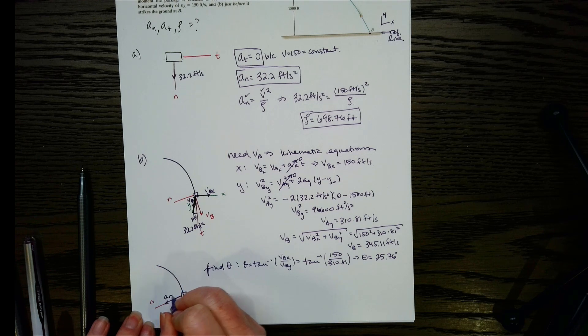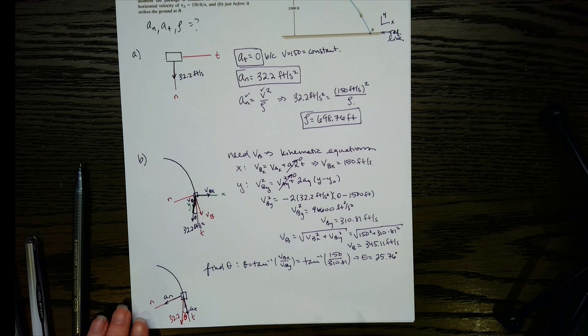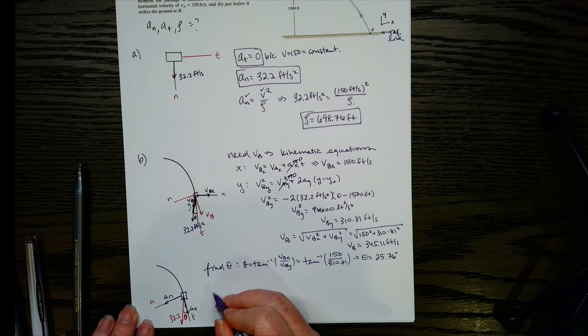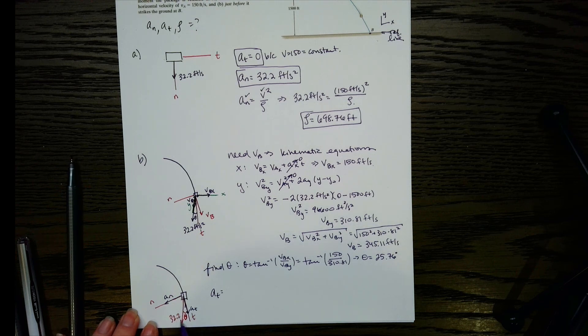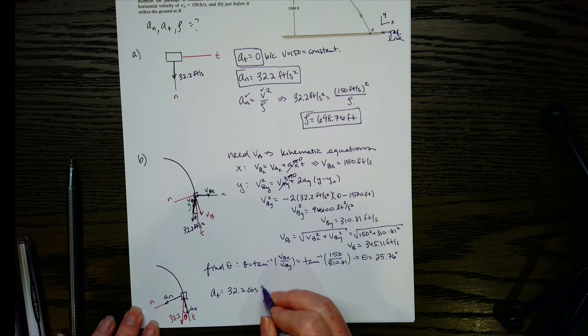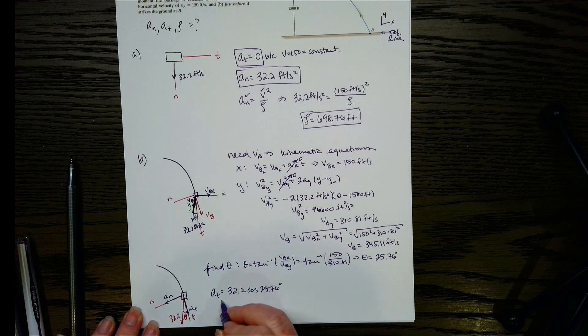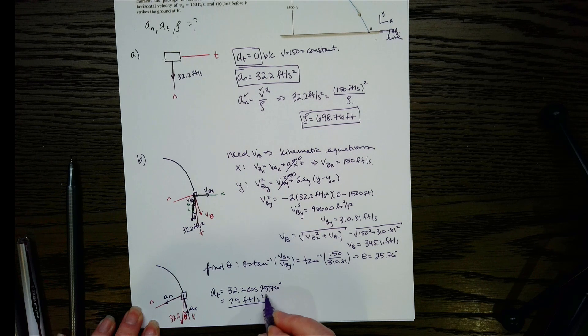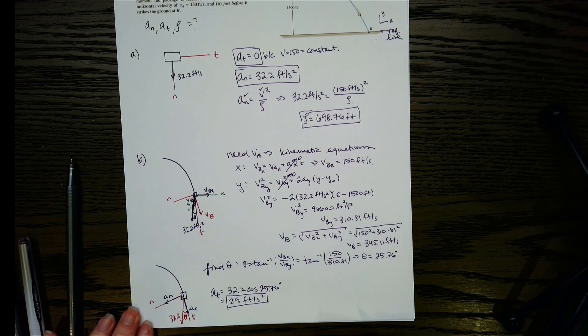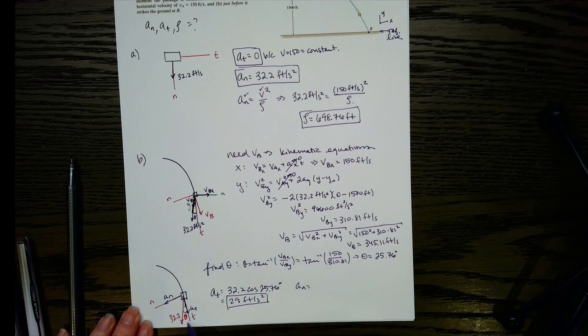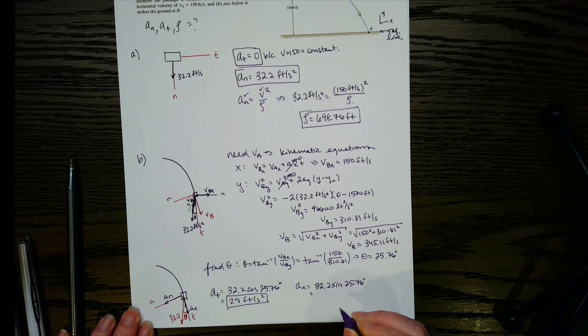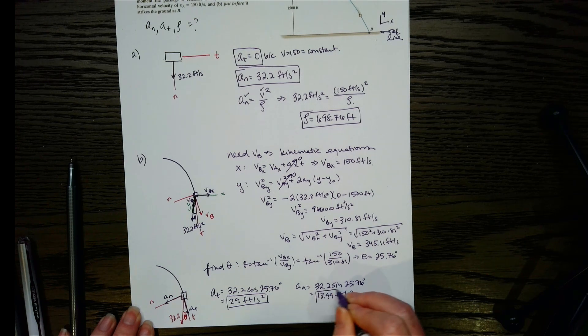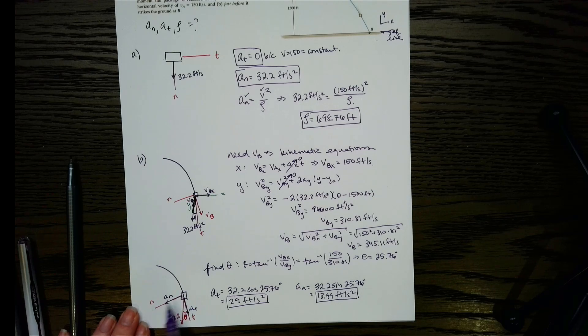We're going to have an AN here, and then an AT here. So let's go ahead and start with AT. This is just like doing a force when you break it into X and Y components. Same thing here, we're just looking at N and T now. So this side here for AT is adjacent to theta, so we're going to have 32.2 cosine theta. It's going in the positive T direction, so it's positive. So there's AT. That's going to equal 29 feet per second squared. So there's our tangential acceleration, and then do the same thing for AN. Now AN is over here, so that's going to be opposite the angle. So we're going to have 32.2 sine 25.76, and that's 13.99 feet per second squared. And again, this is positive because it's going in that positive N direction.